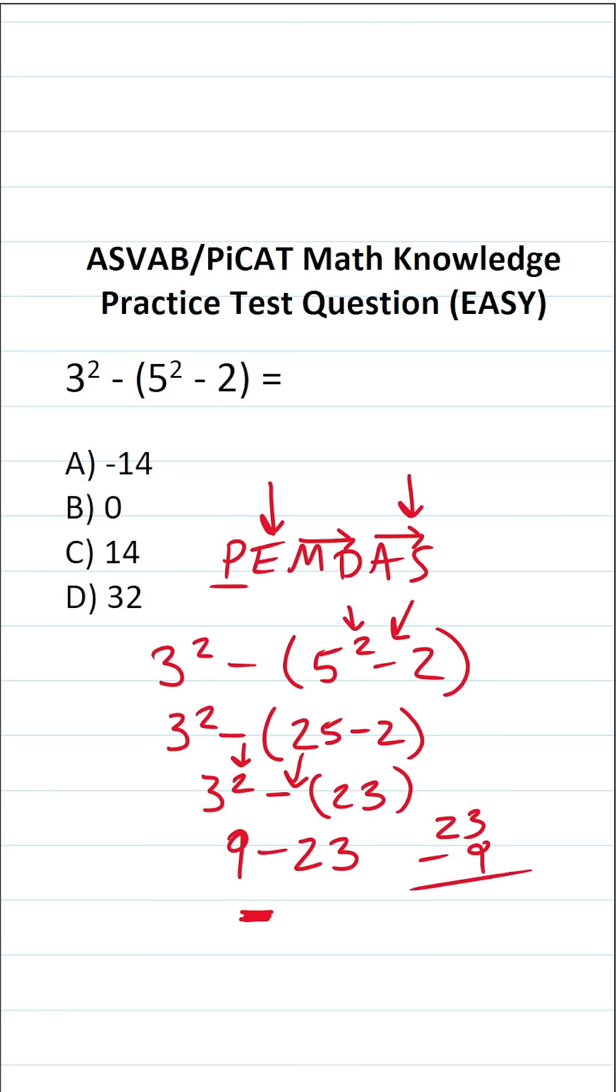Well, 3 minus 9 we can't do. We have to borrow. This becomes 1. This becomes 13. 13 minus 9 is 4. 1 minus nothing is 1.